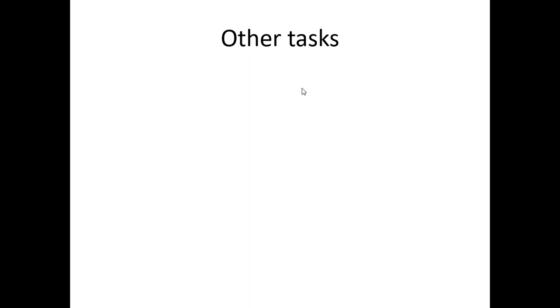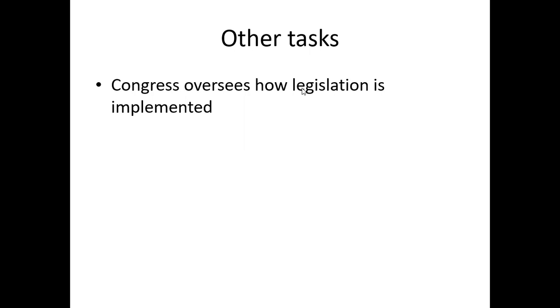Congress has other tasks beyond lawmaking. They oversee how legislation is implemented — this is called oversight. Congress passes a bill, the president signs it, and executive branch agencies implement it. They may not implement it the way Congress meant. Congress can subpoena committee or agency heads to come testify, asking how things are working — ensuring the bill is doing what it was intended to do.